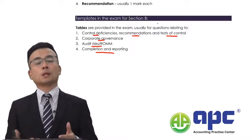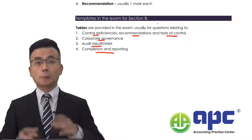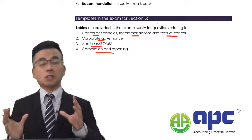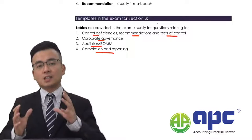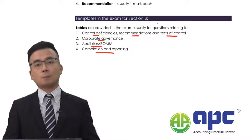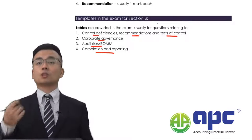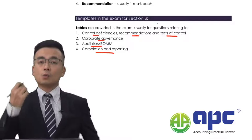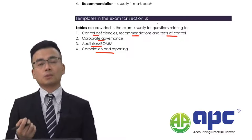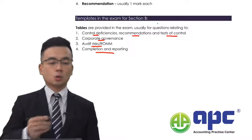For example, performing final analytical procedures by comparing things, by calculating ratios, by assessing going concern data, obtaining written representation from management, and issuing your audit report. We will see the exact steps we will be using in our actual course.